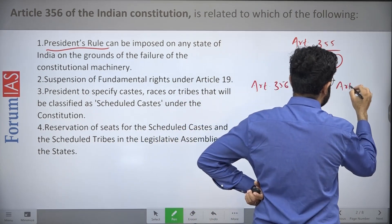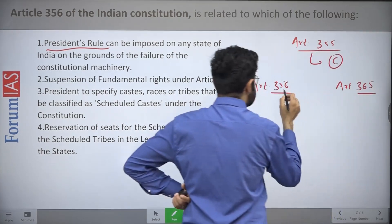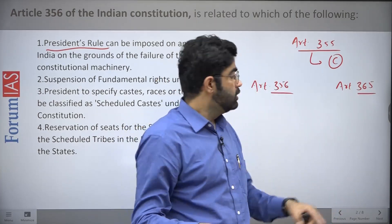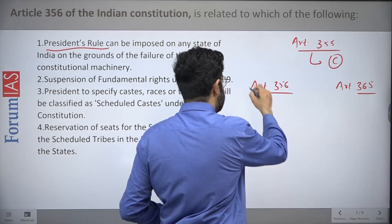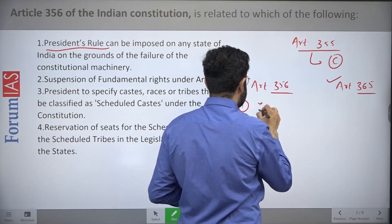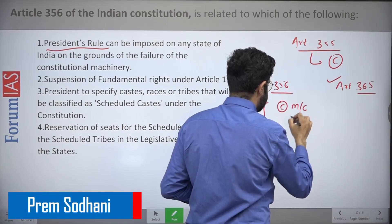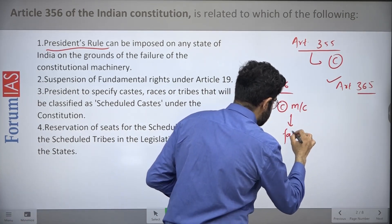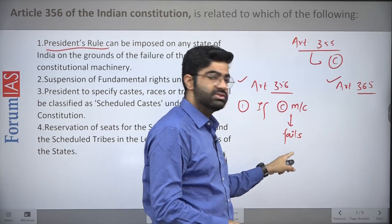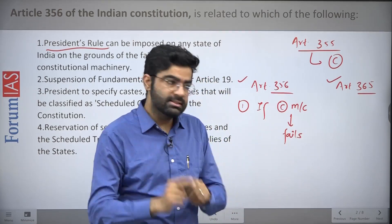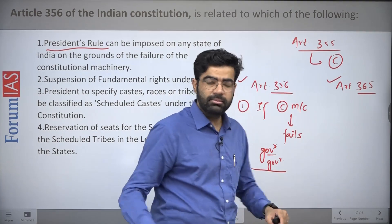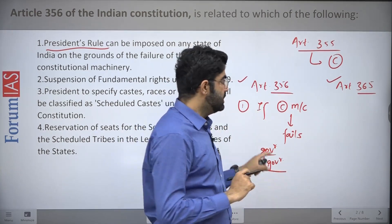Now Article 356 and Article 365 — don't confuse them. Article 356 deals with the conditions required for imposing President's Rule. The first condition: if constitutional machinery fails in a state, the President can impose President's Rule. Even without the Governor's recommendation, the President can still impose President's Rule.